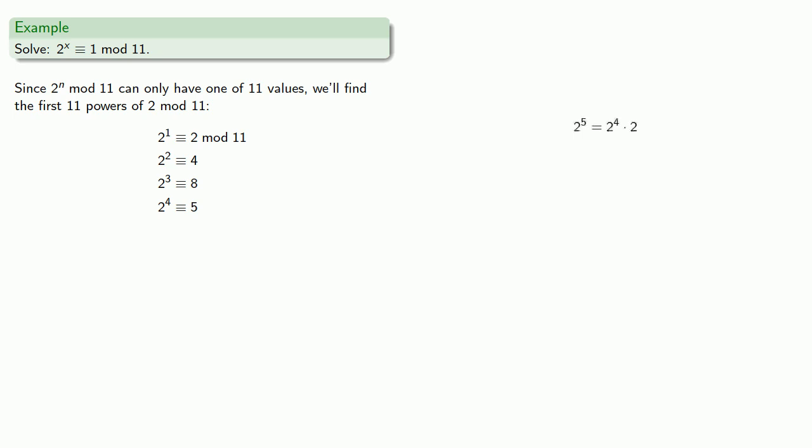2 to the fifth, well that's 2 to the fourth times 2, and we know that 2 to the fourth is congruent to 5, so 2 to the fifth is congruent to 10. Remember working mod n means you can always work with numbers that are smaller than n. We find 2 to the seventh, 2 to the eighth, 2 to the ninth, and finally 2 to the tenth, which allows us to solve this congruence.